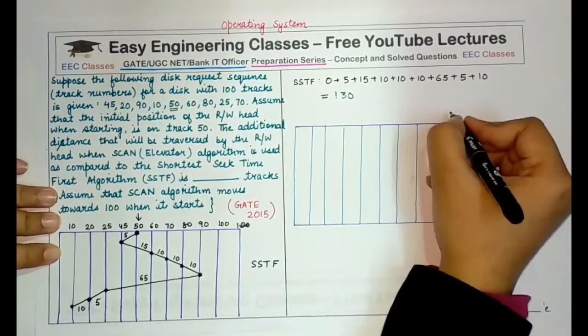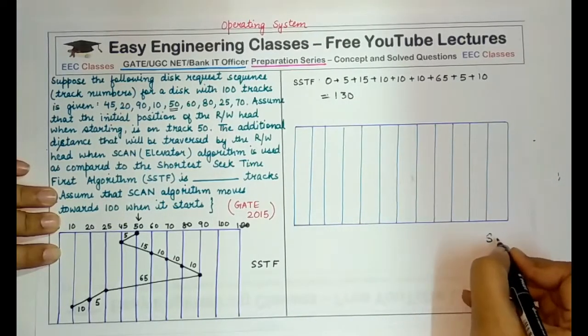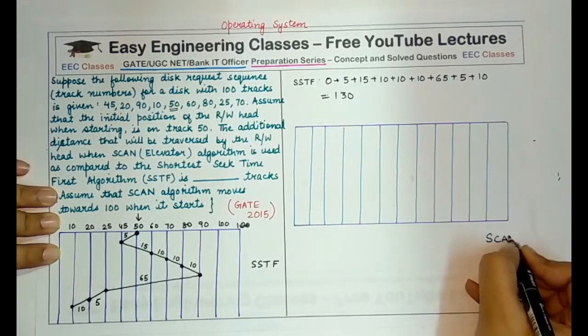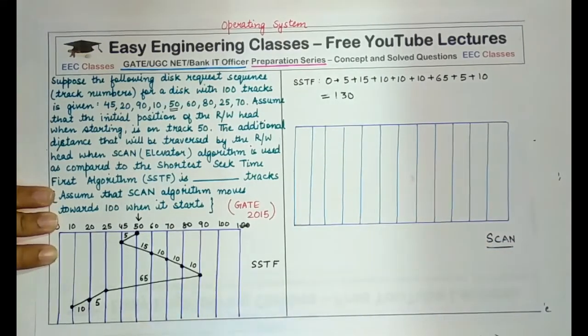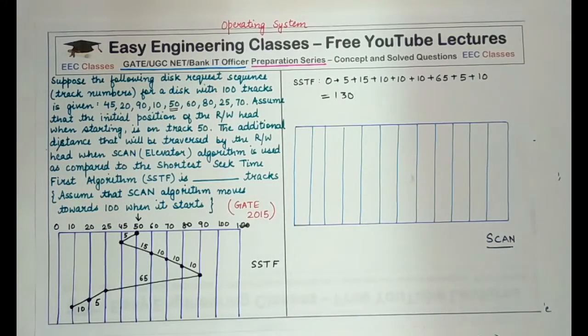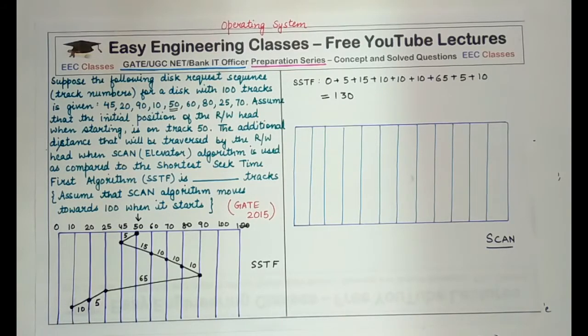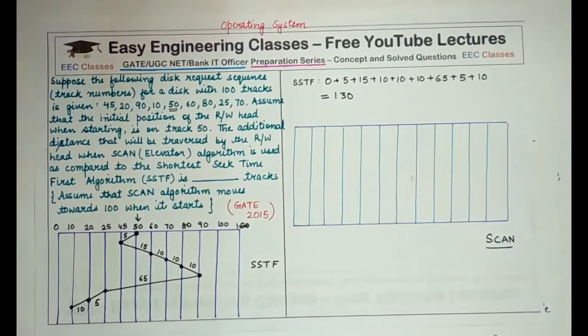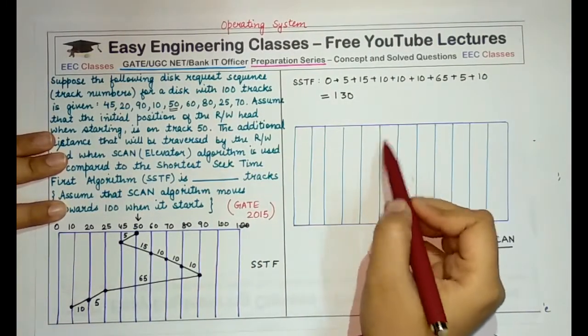So now let's start with the scan algorithm. Scan algorithm would generate a different amount of time. So the scan algorithm, what does it do? It starts in one particular direction and it services all the requests that are made in that direction. And after servicing all the requests in that direction, it reverses the head and moves in the opposite direction, servicing all the requests when it moves to the other end.